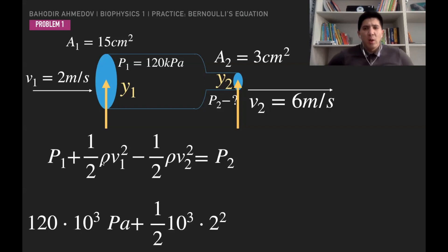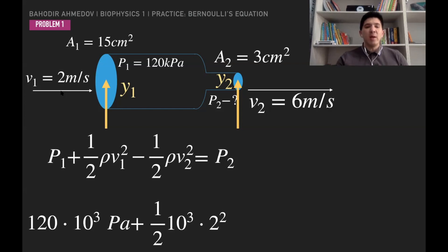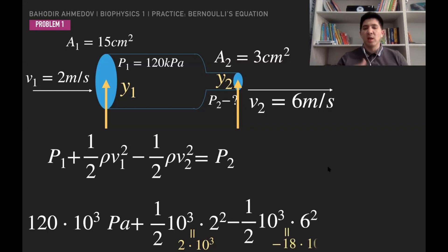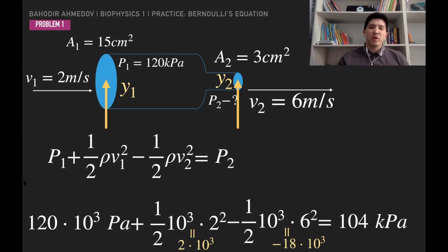Substituting values: P2 = 120,000 + ½ × 1000 × 2² − ½ × 1000 × 6². That gives 120,000 + 2,000 − 18,000 = 120,000 − 16,000 = 104,000 Pa. So the pressure at the second point is 104 kPa — decreased from 120 kPa because the velocity increased.